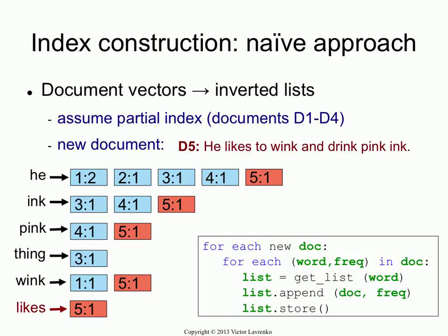What is the problem with this algorithm? You can't parallelize it — that's one concern. But even without parallelization there's a huge problem. Think about the get and store operations. There are two possibilities: either everything is sitting in memory — in which case there's no real problem with the algorithm — except you're assuming you have enough memory to store the entire index.